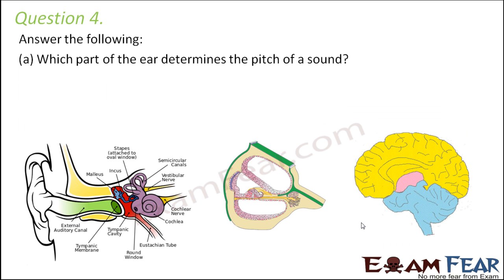Question number 4: Which part of the ear determines the pitch of a sound? Let us recap how sound waves enter the ear. The outer ear only helps to make the sound waves travel inside. The middle ear also helps to efficiently transmit the sound waves. The auditory receptors are present in the inner ear. So the inner ear is that part which determines the pitch of a sound.